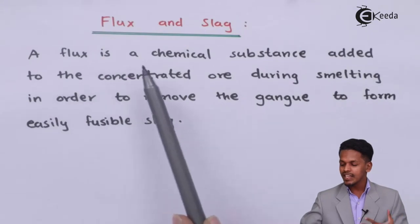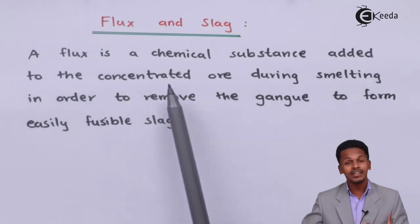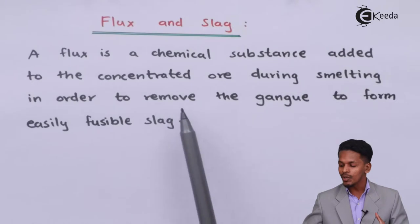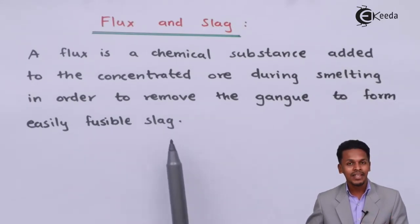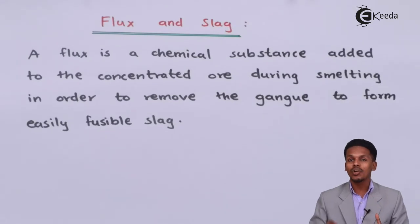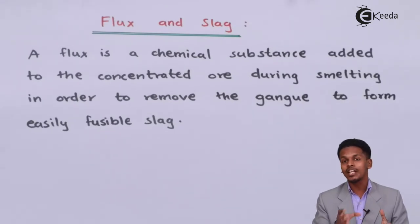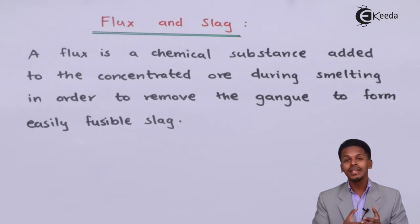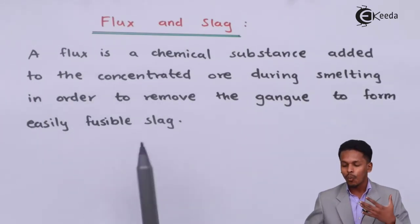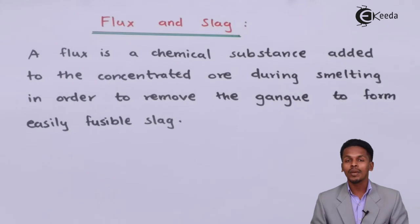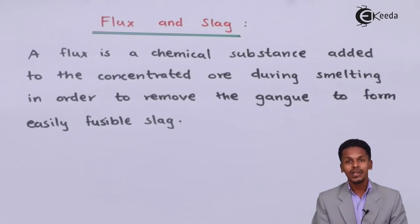A flux is a chemical substance added to the concentrated ore during the smelting process in order to remove the gangue and to form easily fusible slag. Flux is the most important part of the smelting process — it removes the impurity, which is the gangue, and that impurity is removed in the form of slag.